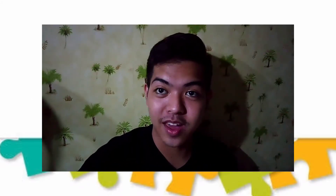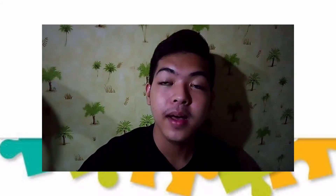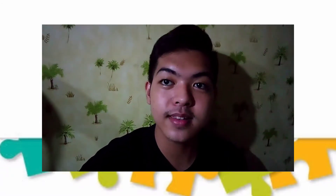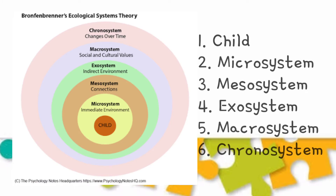Now that we know the definition of ecological system, let us proceed to the layers or the environments that compose it. Ecological Theory has a total of six layers. We have the child, micro-system, meso-system, exo-system, macro-system, and chrono-system.